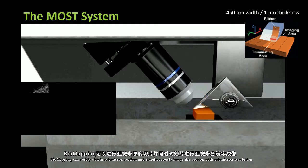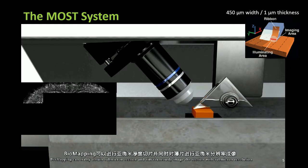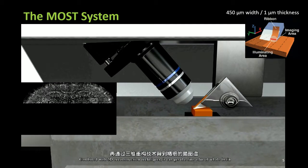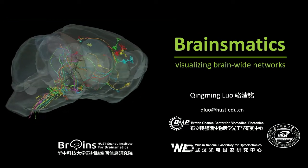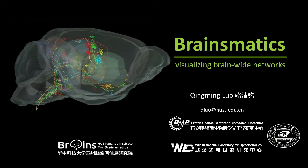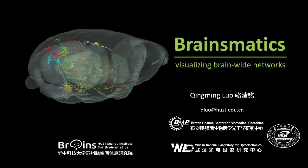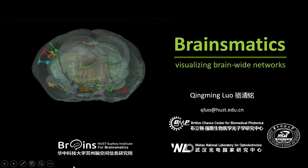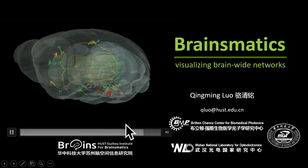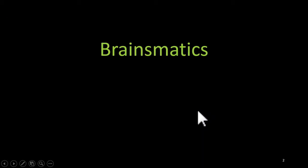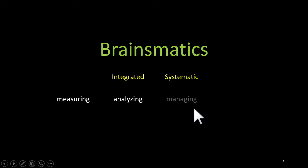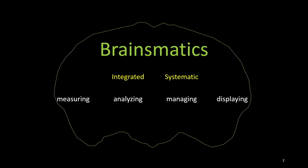This movie shows the principle. We use a diamond knife to do physical sectioning of the brain sample. During the physical sectioning, we acquire images. Since we know the exact position of where we image, it becomes easy to do automatic coverage registration and reconstruct in 3D. Taking advantage of our MOST physical sectioning, we can combine it with optical sectioning techniques such as confocal, two-photon multiphoton, photoacoustic, OCT, and structured illumination microscopy.